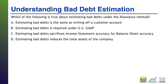Welcome back. Starting at the top: estimating bad debts is the same as writing off a customer account. That is not true. You record a bad debt estimation before you ever know what account you're actually going to have to write off. You estimate based on historical trends, industry trends, whatever the case may be, to figure out what you think you won't collect. Writing off occurs when you actually know what you won't collect.